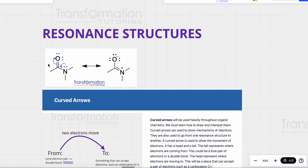Here, for example, I have a molecule on the left and a molecule on the right. Notice that all of the atoms stayed in their place — oxygen is here, oxygen is here. The only thing that moved is the electrons.